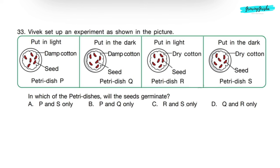Question 33: Vivek set up an experiment as shown in the picture. In which of the petri dishes will the seed germinate? Seeds will germinate in petri dishes P and Q only. This is because seeds need air and water to germinate. They can also germinate in absence of sunlight. So correct answer will be option B: P and Q only.